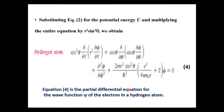Now, substituting the potential energy and multiplying the entire equation by r squared sin squared theta, we obtain: sin squared theta times d by dr of r squared times d psi by dr, plus sin theta times d by d theta of sin theta times d psi by d theta, plus d squared psi by d phi squared, plus 2m r squared sin squared theta by h-cross squared times e squared by 4 pi epsilon-0 r plus E equals zero. This can be done as an exercise — substitute the potential V into Schrödinger's equation, multiply by r squared sin squared theta, and you will arrive at this expression.